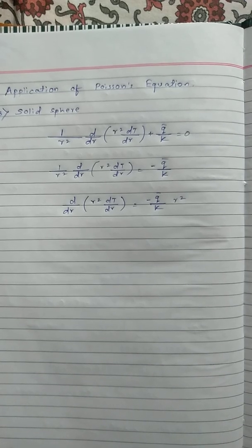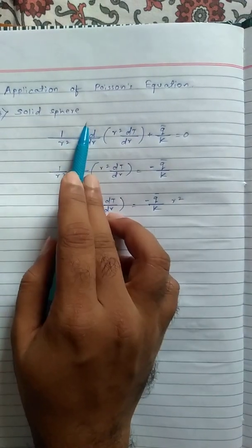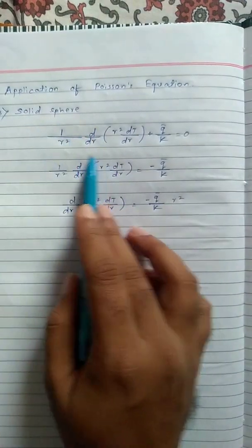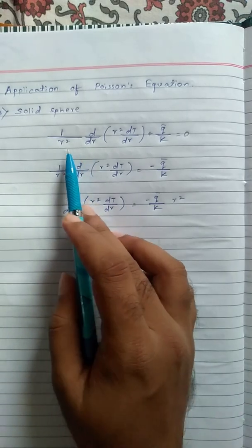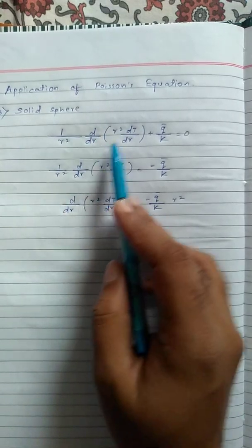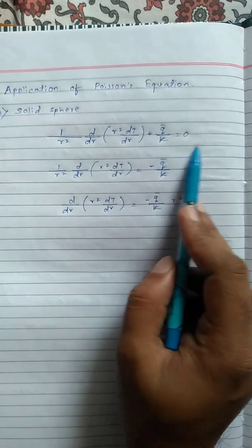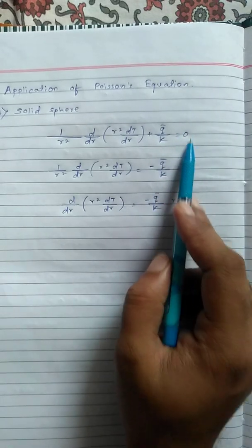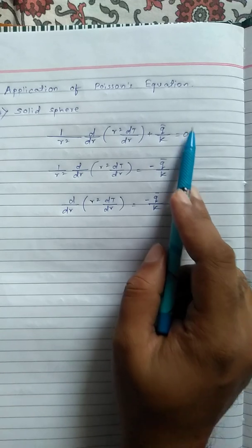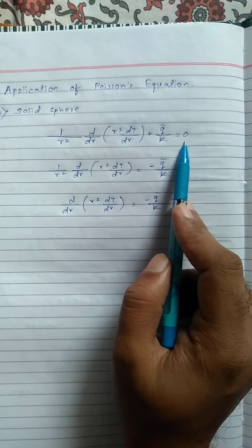Hello everyone. In this video we are going to see the application of the unidirectional heat equation for a solid sphere. For a solid sphere, we are going to consider the spherical coordinate equation: (1/r²) d/dr [r² dT/dr] + q̄/k = 0. For steady state, dT/dt = 0.